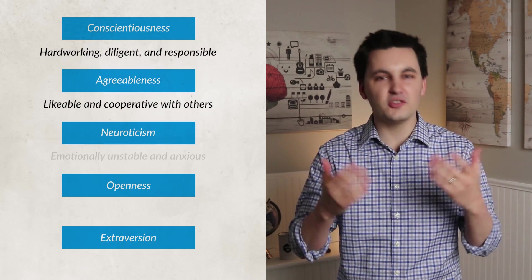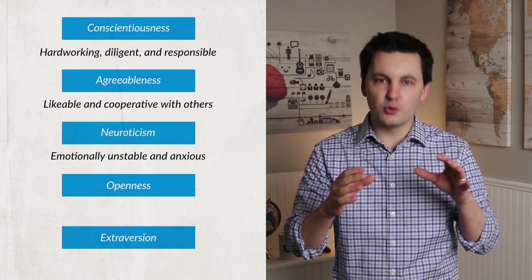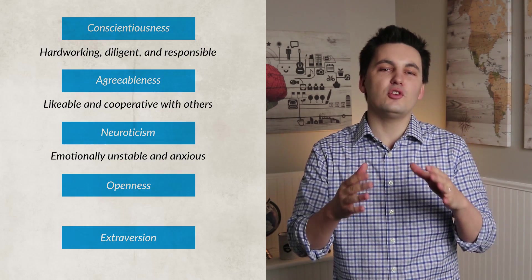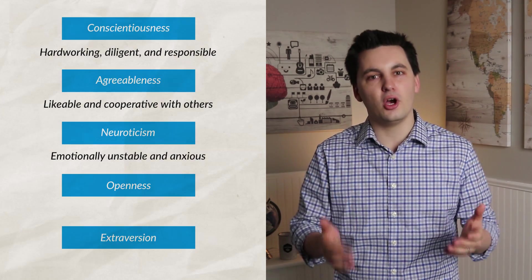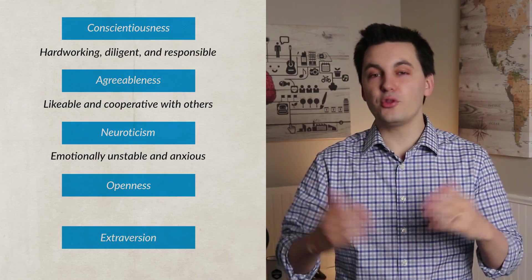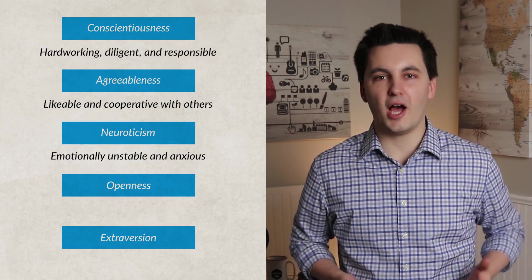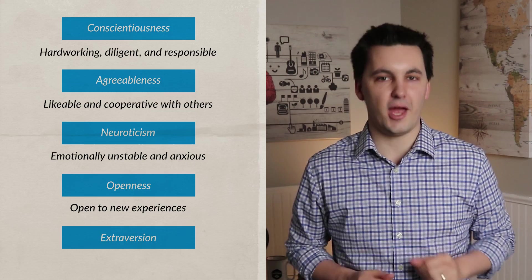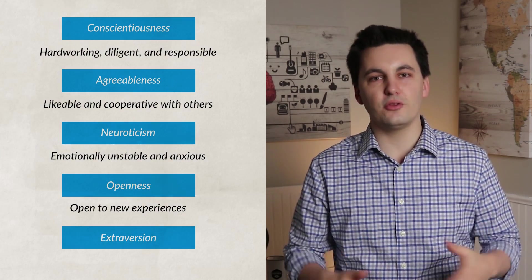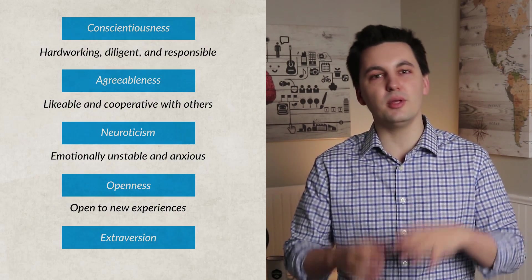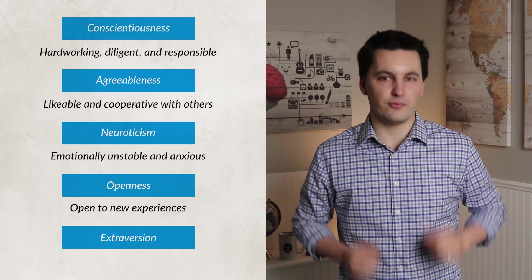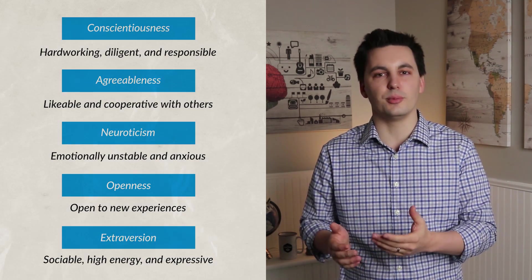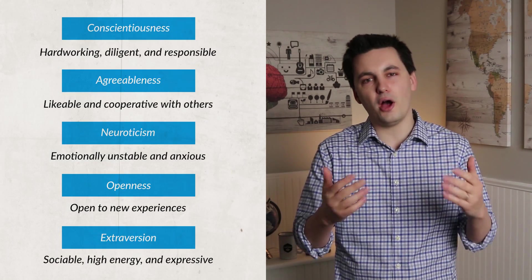The third is neuroticism, which focuses on emotional stability. Individuals who score high in this category will be more insecure and anxious, while individuals with a low score will often be more calm and feel secure with themselves. The fourth is openness — if an individual scores high here, they'll be more open to new ideas and more imaginative; if they score low, they'll often find comfort in routines and be more practical. Lastly, there's extraversion — if an individual scores high here, they're more often affectionate and sociable, but if they score low, they're often more reserved.